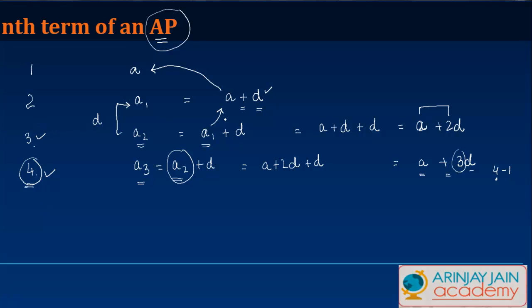Similarly, if you see third term, it is written as A plus 2D. What is 2? 2 is 3 minus 1. So generally, we say that for the nth term...